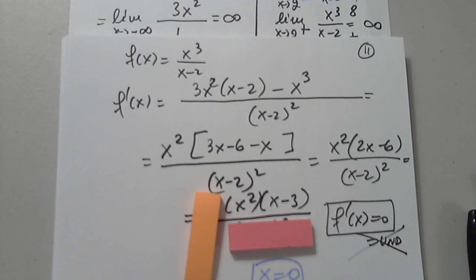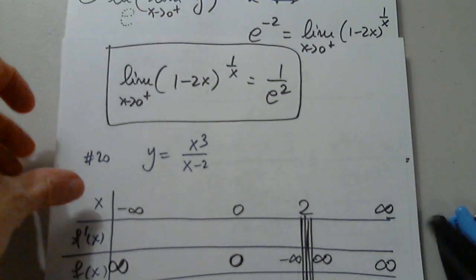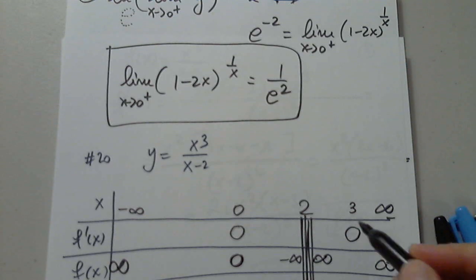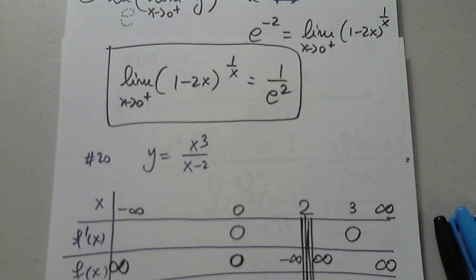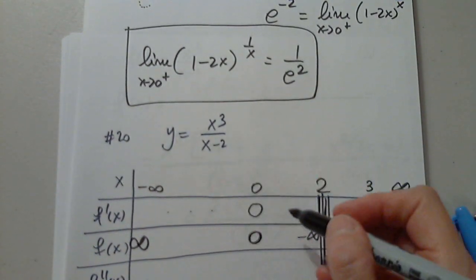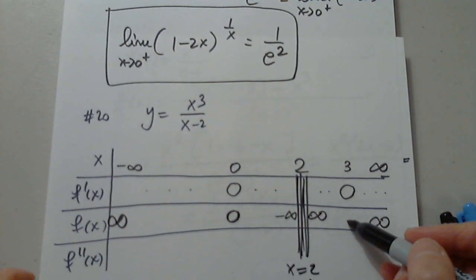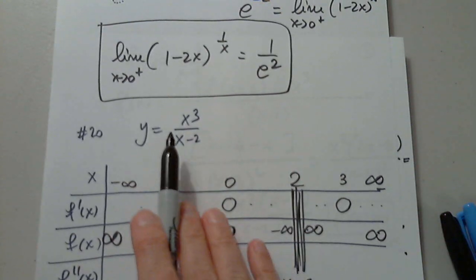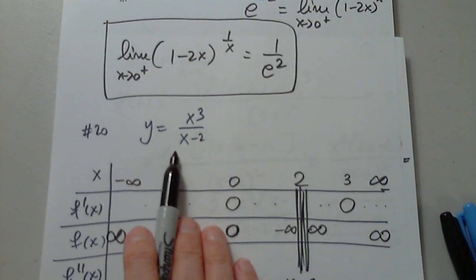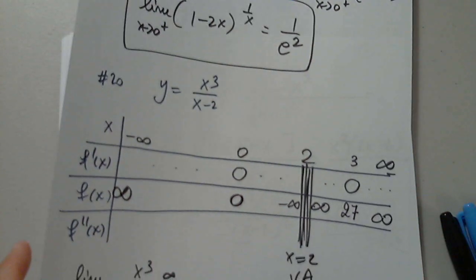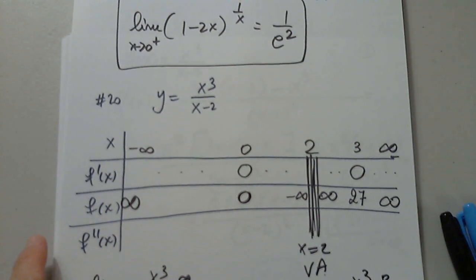So, I go back to my table. I discovered something very important. Now, I have to study the sign here, here, and here. I have to plug in 3 in the function. 3 to the third is 27. 3 minus 2 is 1. 27 over 1 is 27. Good.